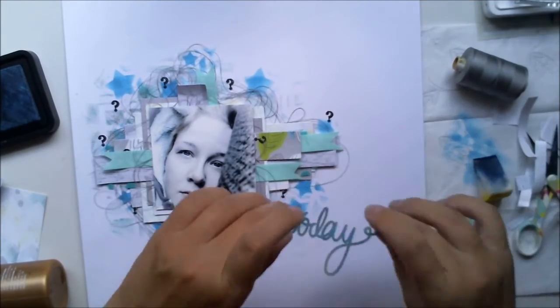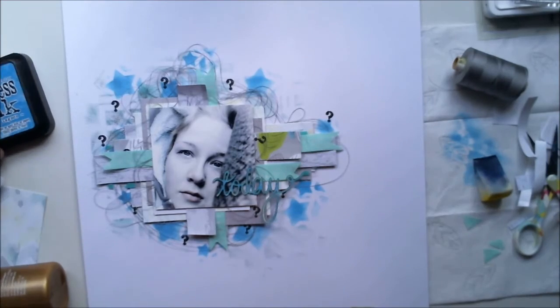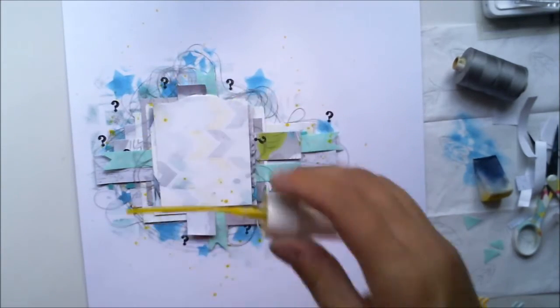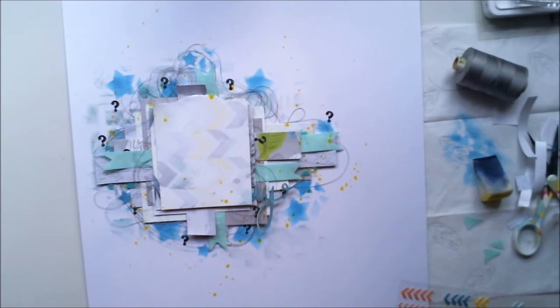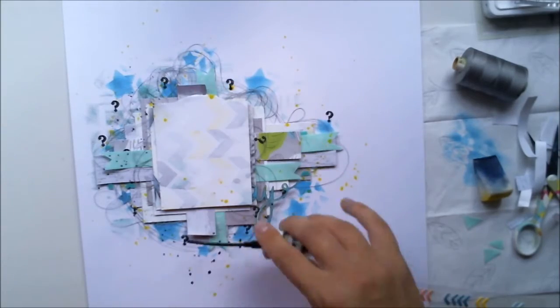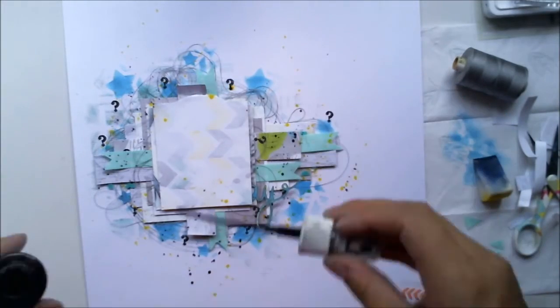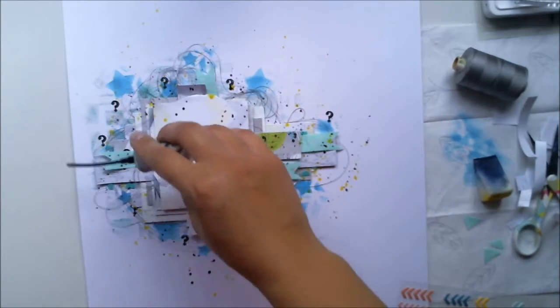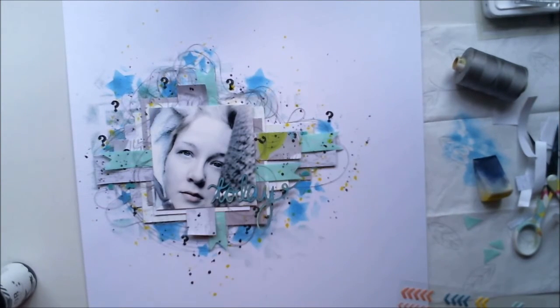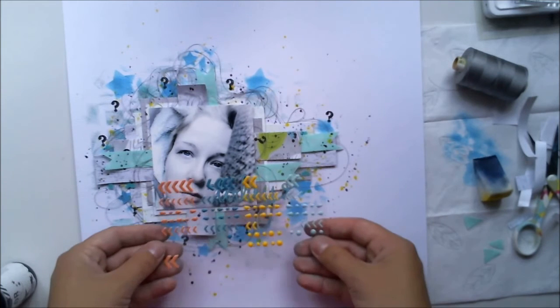I chose this 'today' chipboard from Create a Smile and colored it with Distress ink. I'm doing some flicks with yellow to give some brightness to this miserable layout, and using black mist to bring some contrast and repeat the black from those question marks on the background.